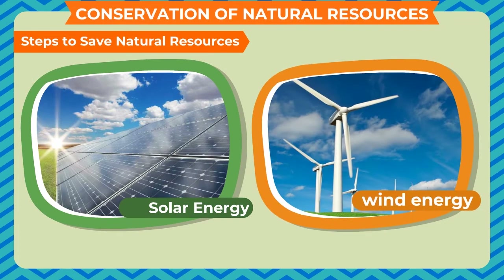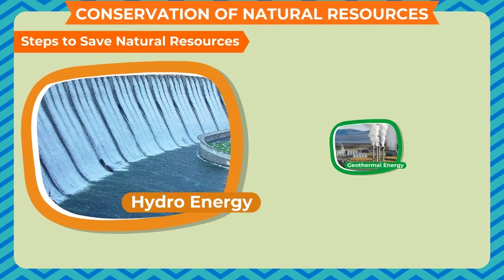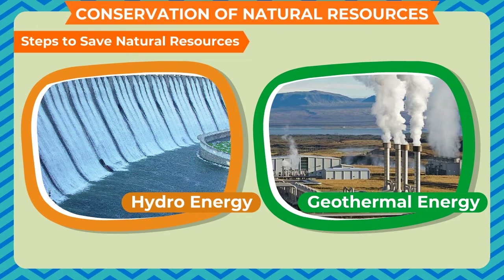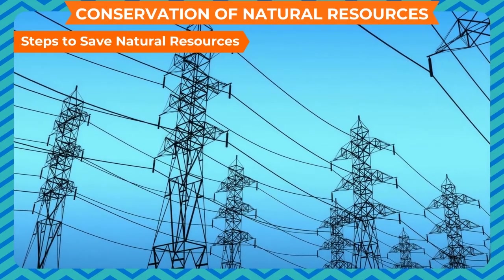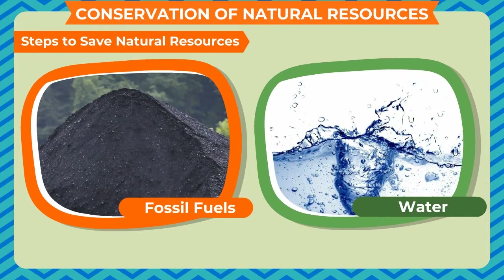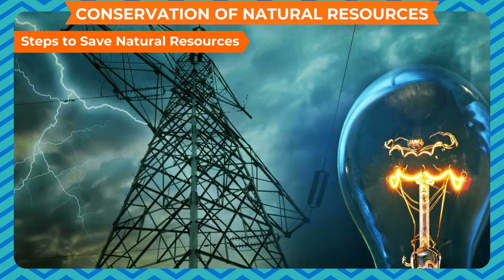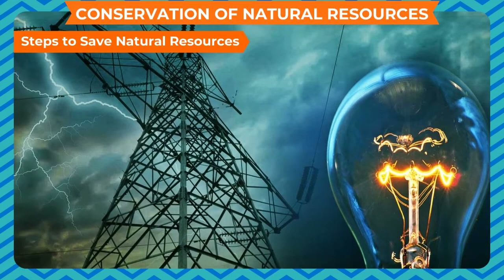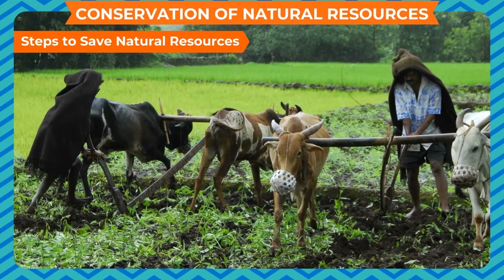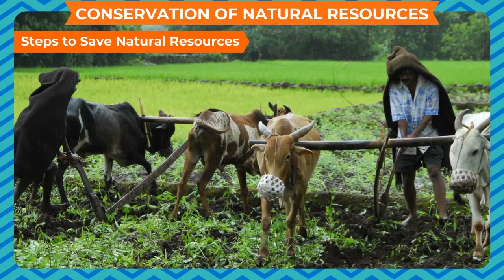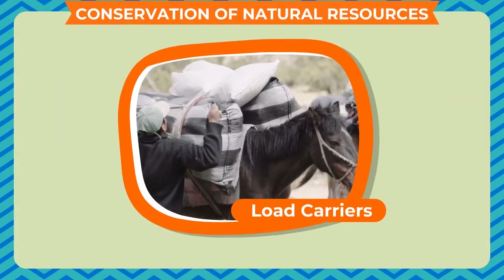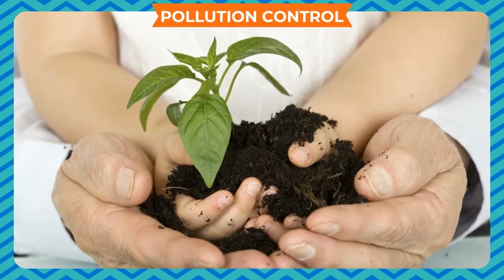Other forms of energy like solar energy, wind energy, hydro energy, and geothermal energy should be used as much as possible. Since electrical energy is obtained from limited natural resources like fossil fuels and water, we should save electricity as much as possible. Animals are also our natural resources — we depend on them for food, fiber, and as load carriers — so we must protect them.